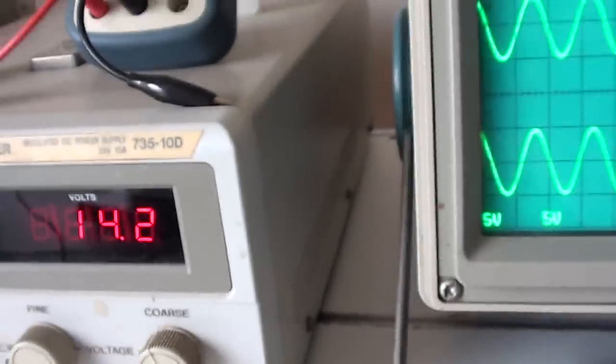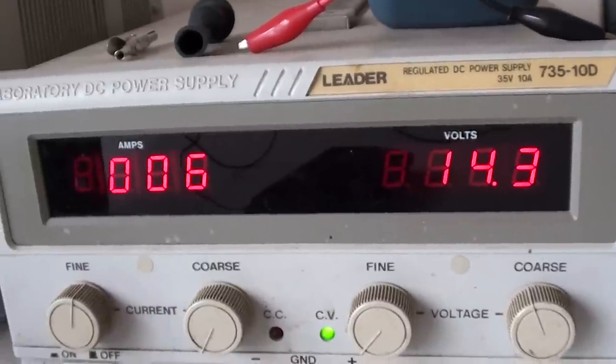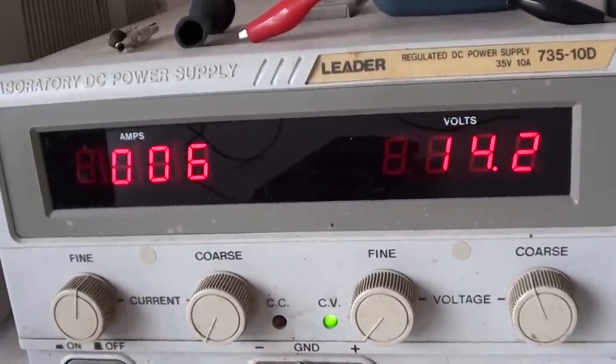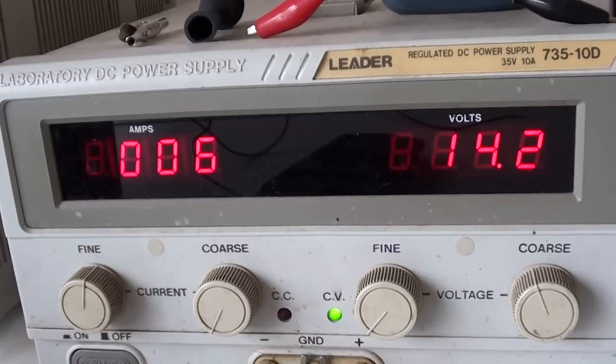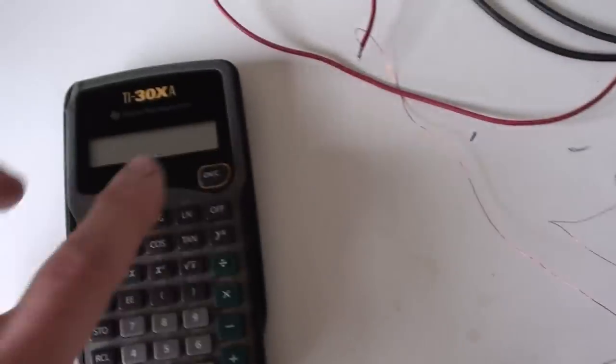Again, this is at 14.2 volts. And the amp draw went up by 0.04. So that's 40 milliamps of power going to the primary coil.